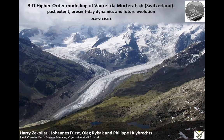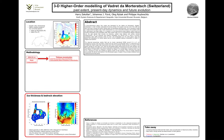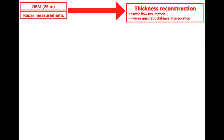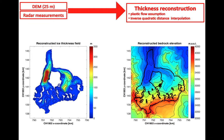Hi, my name is Harry and I will shortly introduce to you my poster, which is a modeling study on the Mortrej Glacier in Switzerland. This is how the poster looks like and it's subdivided into three parts. In the first part, which is in red, the ice thickness is reconstructed. This is done by combining radar measurements with several theoretical assumptions, and by doing so we reproduce the ice thickness over the glacier and deduce the bedrock elevation.